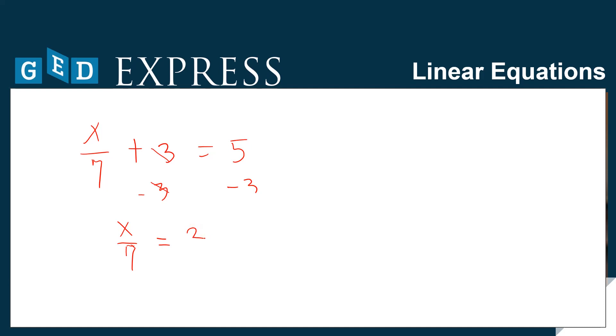Then the next step, the operation between x and 7 is division. So we can undo division by its opposite multiplication. So we can multiply both sides by 7 times 7. So 7 times x is 7x divided by 7, so we can just simply cancel the 7. That's 1. 1x equals 14. So that's the two-step equation.